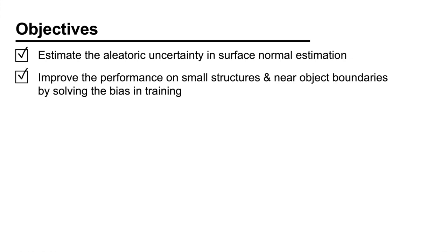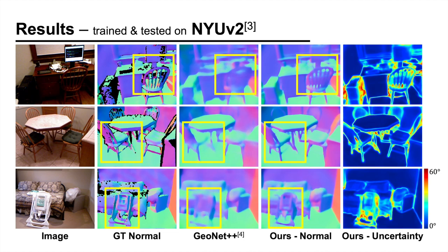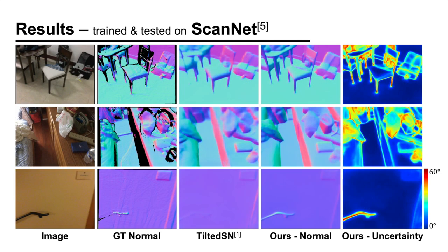Now, let's look at some results. Here we train and test our method on NYUv2. Despite the poor quality of the ground truth, our method can recover the fine details of the scene geometry. If the quality of the ground truth is better, as in ScanNet, the level of detail in the prediction improves significantly.